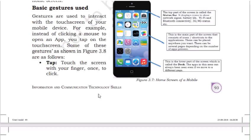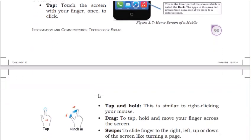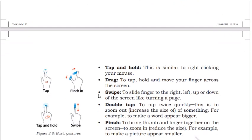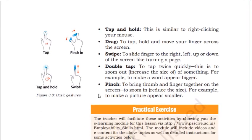Gestures include: Tap — just touch the screen with your finger once, like a click. Tap and hold — similar to right-clicking your mouse, it shows more options. Drag — hold a particular icon and move your finger to reposition it. Swipe — slide your fingers right, left, up, or down on the screen, like turning a page. Double tap — to activate or zoom in on certain things. Pinch — bring two fingers together on the screen to zoom in.